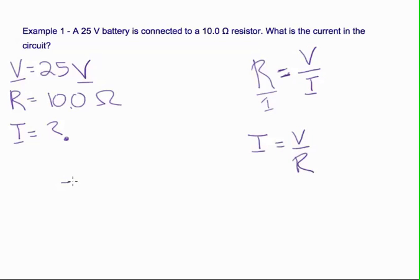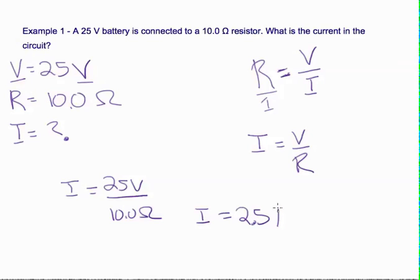So we can plug in I equals V over R. And so our I equals 2.5, and we can see that we're going to need two significant figures. 2.5, and we measure current in amps. So you can put an A, or you can write amps, or you could write out amperes if you wanted to.